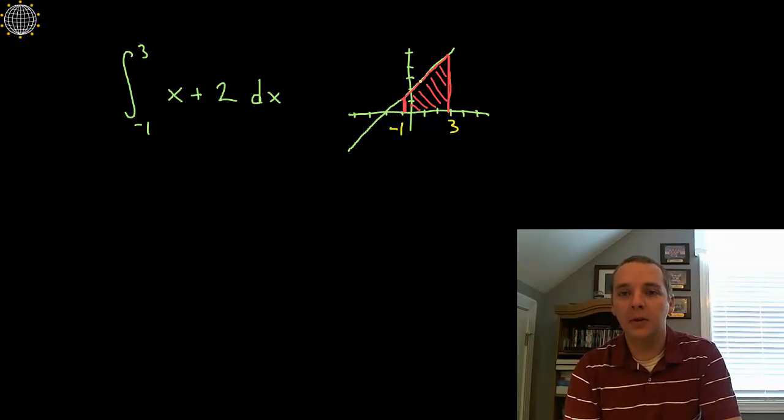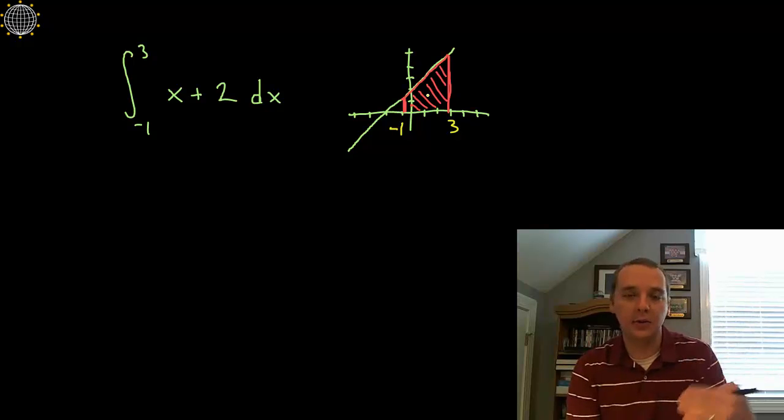Now what does this notation mean? This means the area under the curve down to the x-axis or above the x-axis from my x is minus 1 to x being 3.